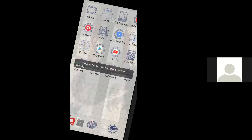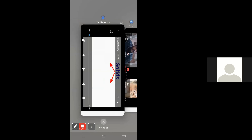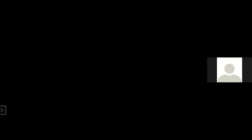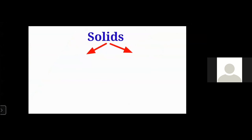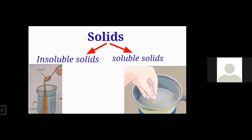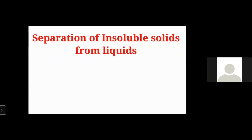Today we are going to deal with nine methods of separating a mixture. Let me share my screen. So the screen is visible. Today we are going to learn about the separation of solids from liquids. There are two types: insoluble solids and soluble solids. The example of insoluble solids is sand in water, and the example of soluble solids is the mixture we get when we dissolve sugar in water. Now let's deal with how to separate insoluble solids from liquids. There are three methods.